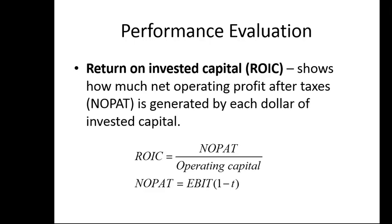The first measure we'll talk about is return on invested capital, or ROIC. It shows how much net operating profit after taxes — so-called NOPAT — is generated by each dollar of invested operating capital, which consists of net working capital and fixed operating capital such as plant and equipment. So ROIC is just NOPAT divided by operating capital. You calculate NOPAT by taking EBIT, earnings before interest and taxes, and multiplying by one minus the tax rate.